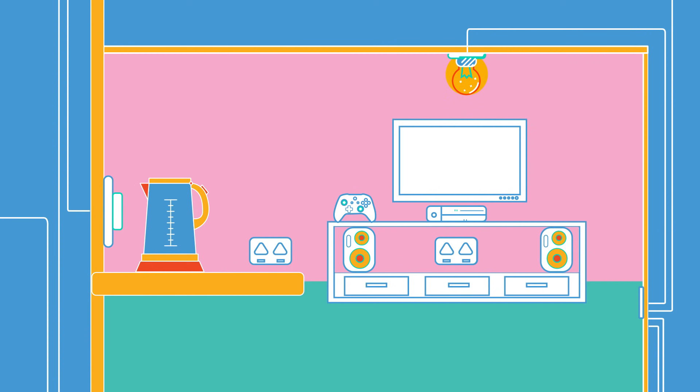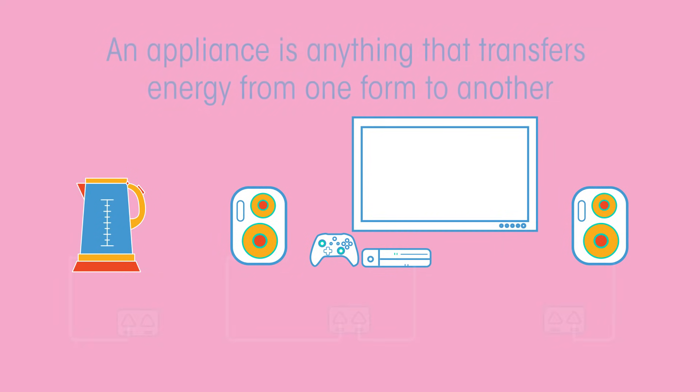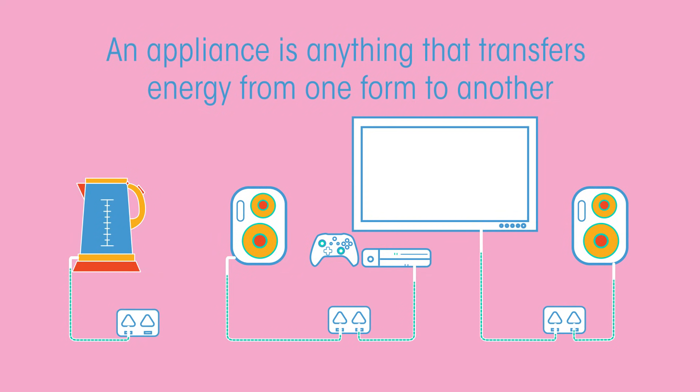Wires inside walls carry electricity to electrical sockets and lights in a house. Whenever you plug in an appliance, you're connecting it to an electrical circuit. An appliance is anything that transfers energy from one form to another.